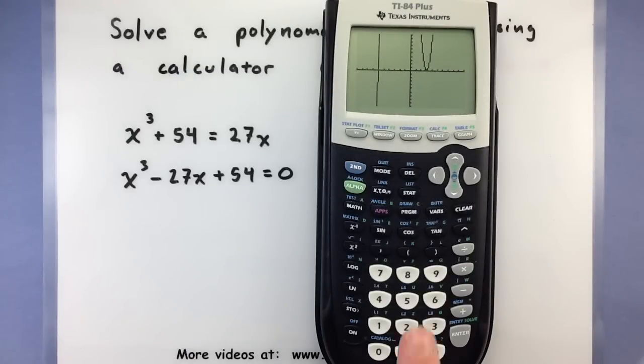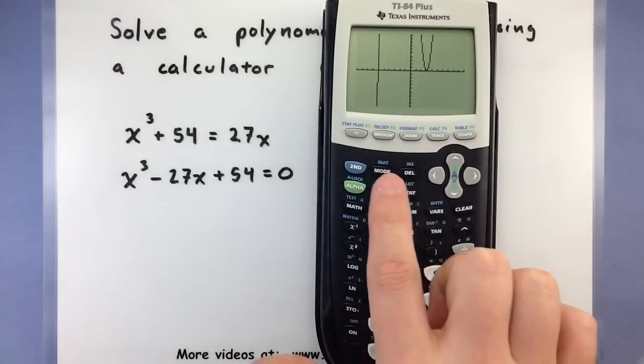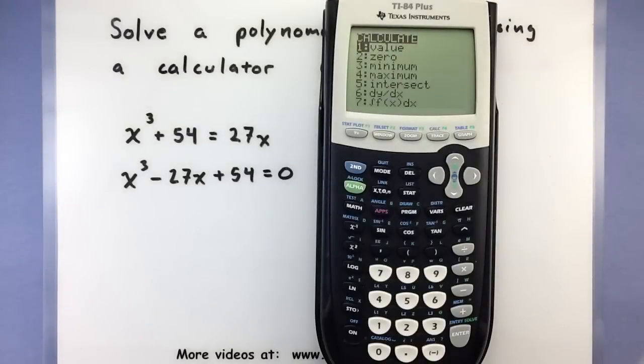To have the calculator find these, press your second and then trace button to get the calc menu. So second, calc. You want to use the option number two for zeros.